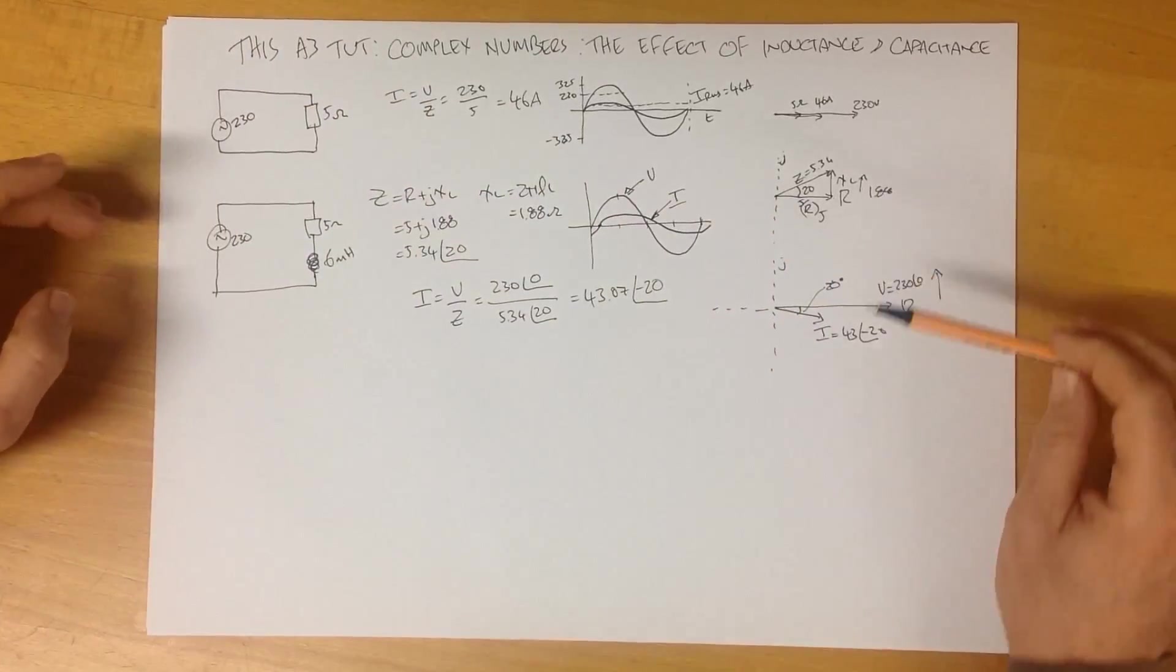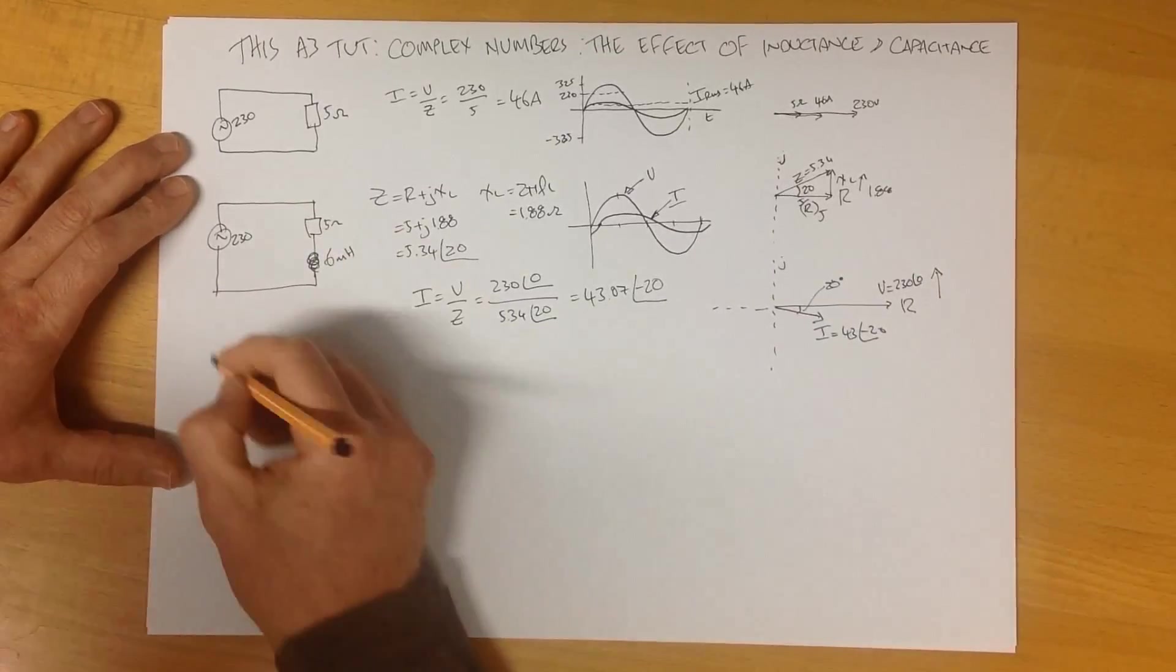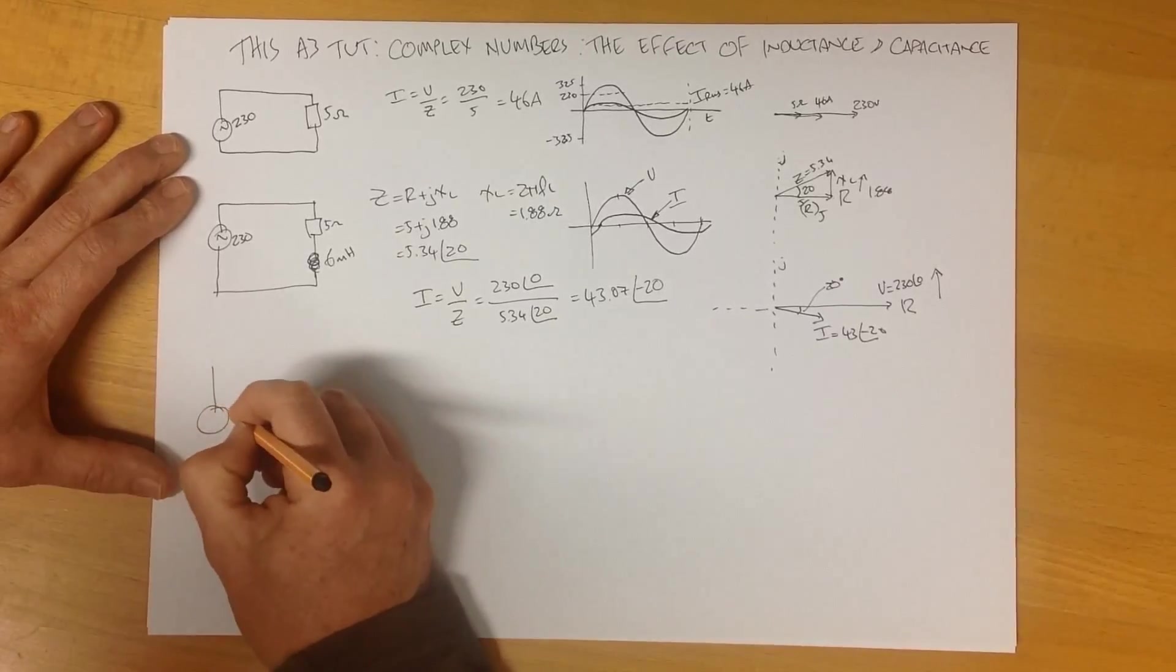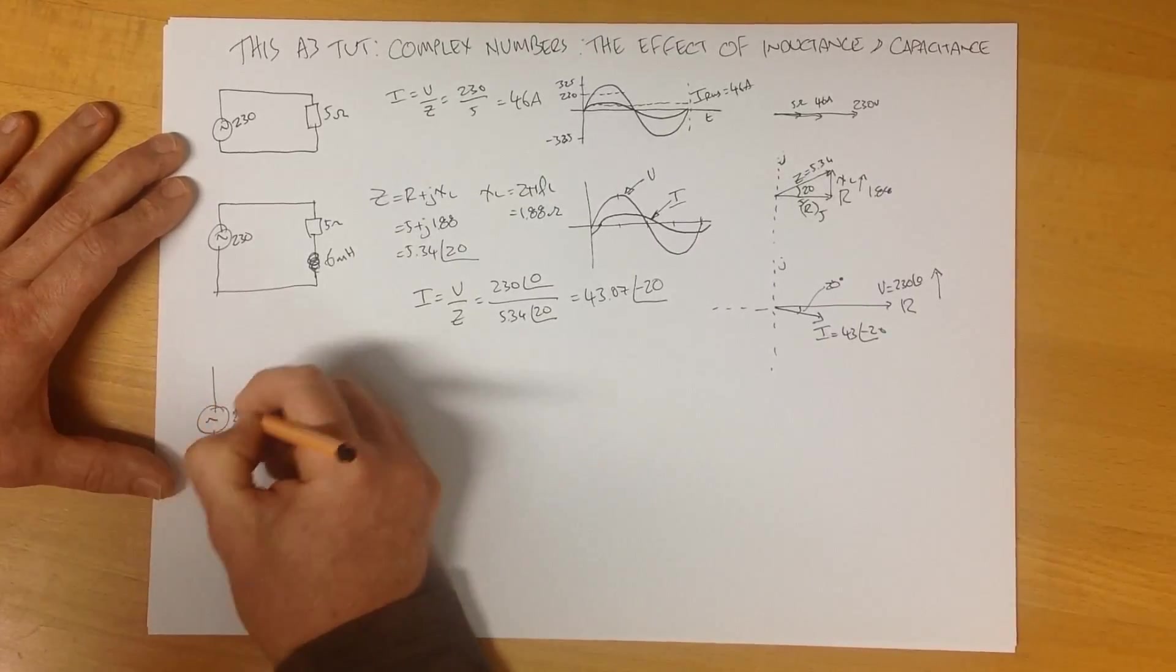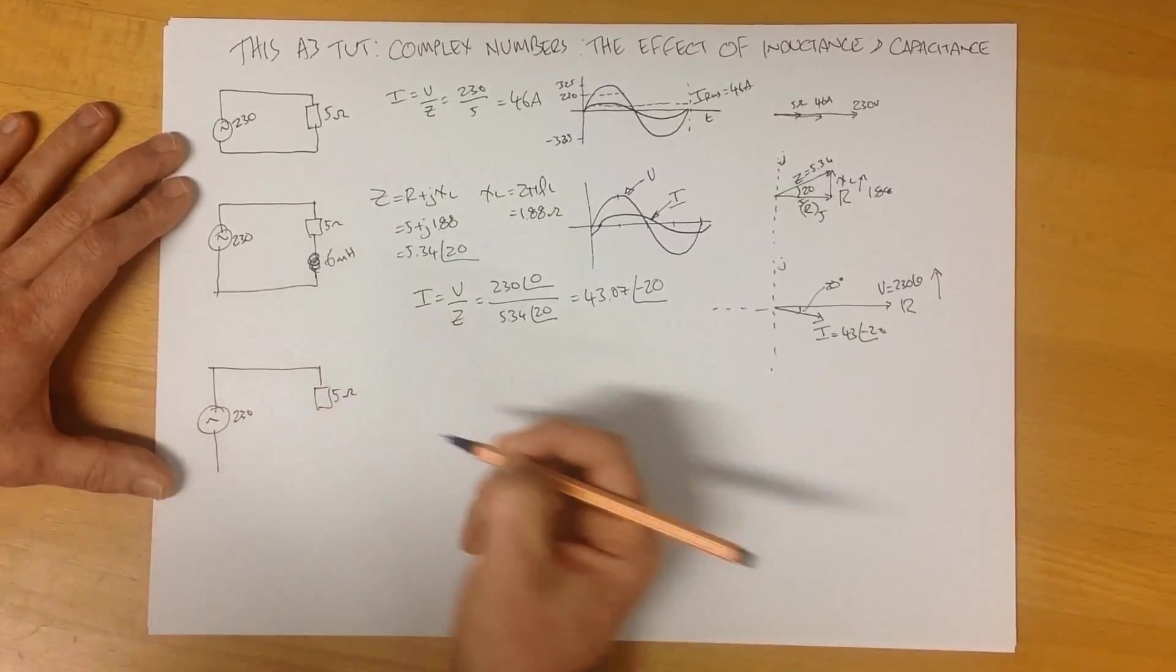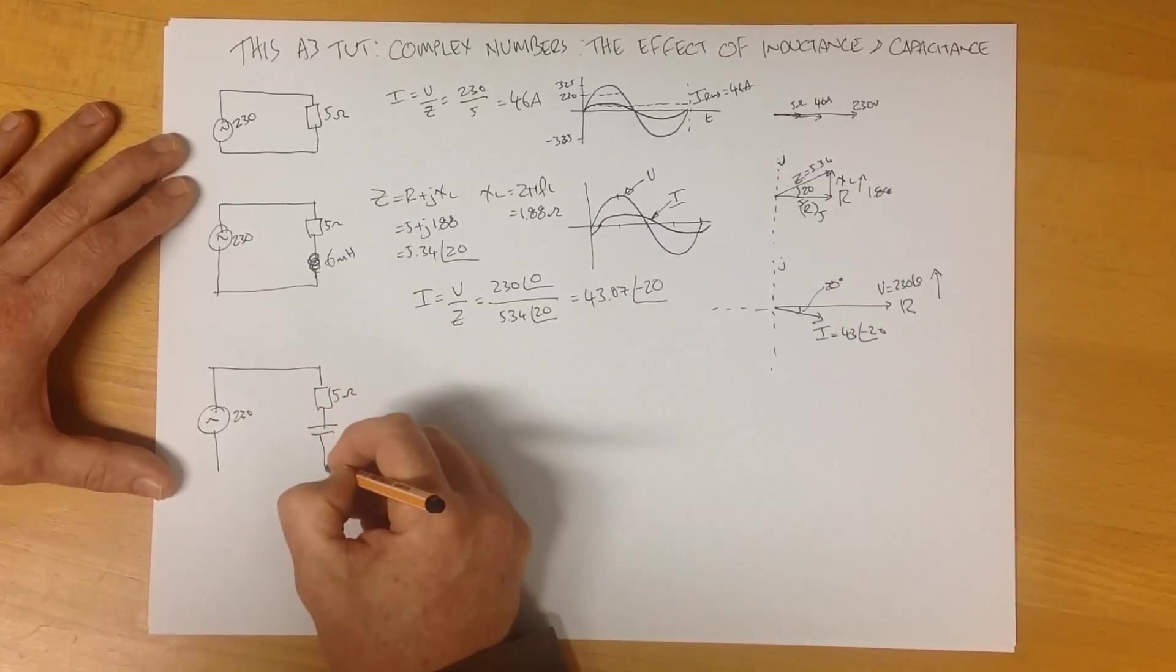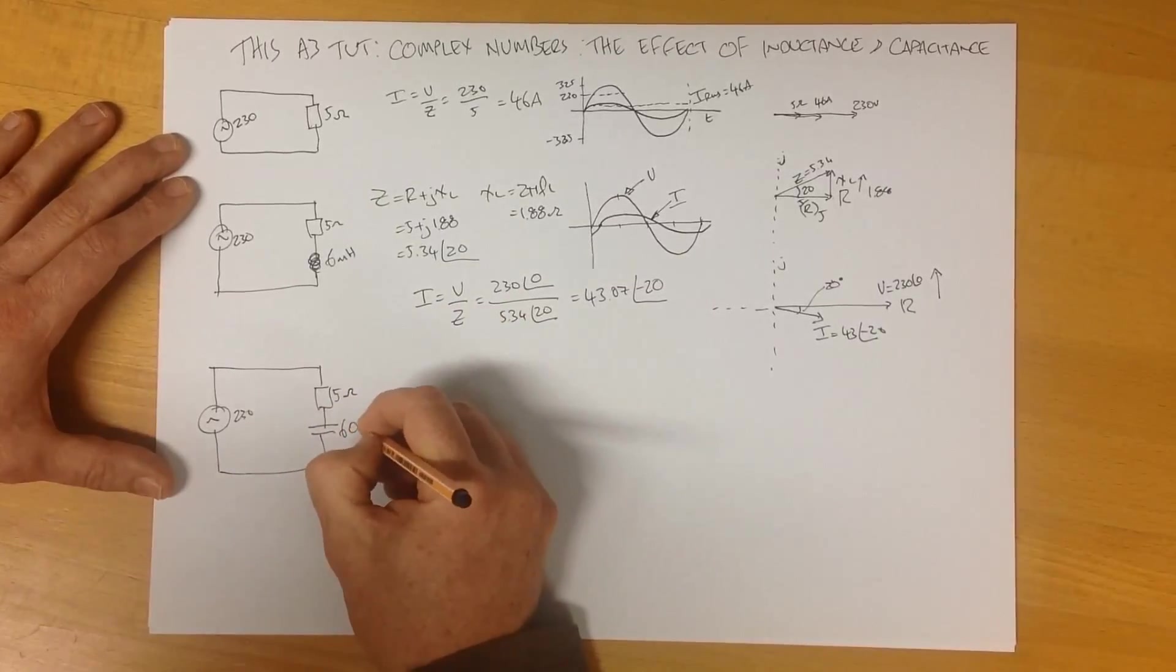This process works exactly the same for capacitive loads. So if we use a similar circuit, we come down here, again we've got our 230. Again, we've got 5 ohms of pure resistance, and I've just picked a capacitive value to do the math, and let's call it 600 microfarads.